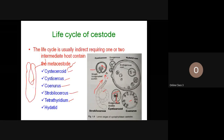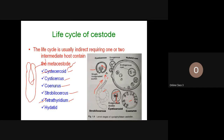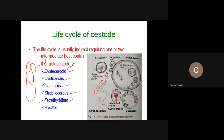Tetrathyridium is an elongated solid body metacestode containing a deeply invaginated single scolex. In Mesocestoides, two types of intermediate hosts are required: the first intermediate host contains the cysticercoid, and the second intermediate host contains the tetrathyridium. Strobilocercus is found in Taenia taeniiformis.